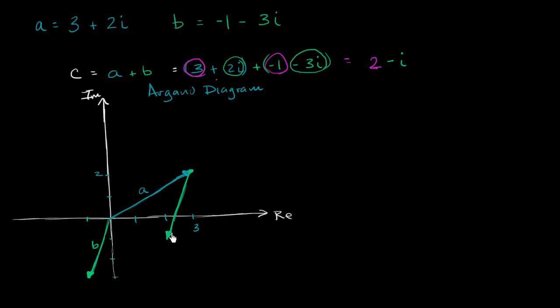So this is complex number b, b right over here. And notice, now if we start at the tail of a and we go to the head of this shifted b, this right over here is going to be vector c. This is going to be a plus b.